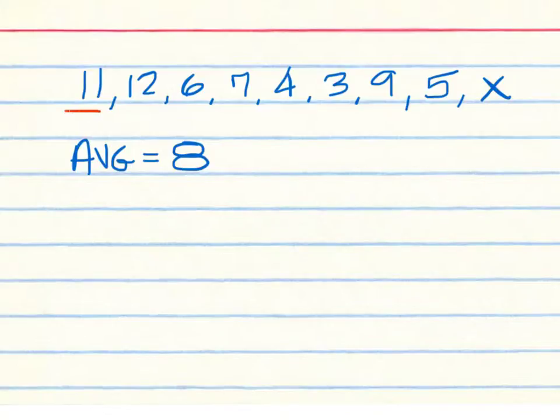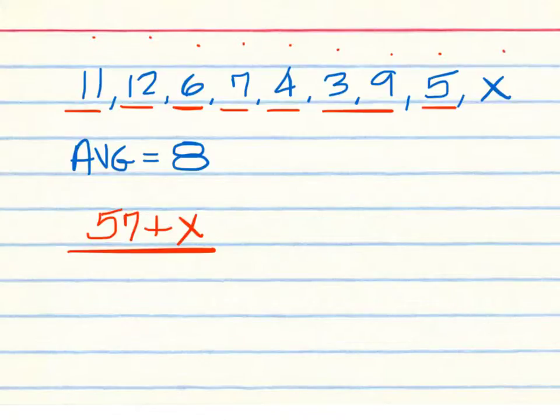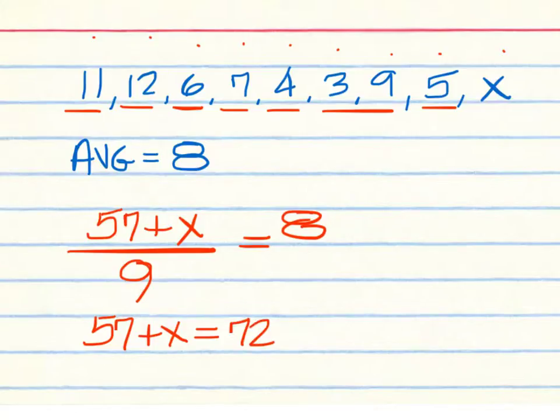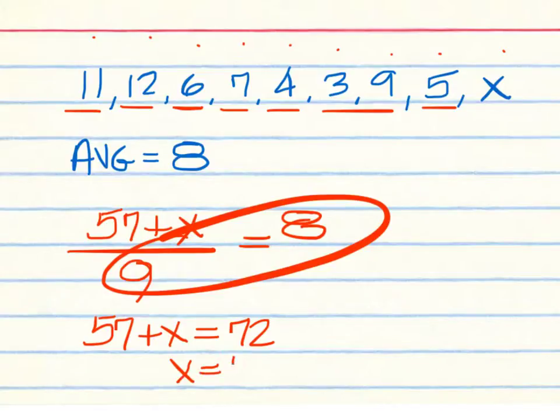57. Let's see. 11, 23, 29, 36, 40, 52, 57. Yes. And what do I add to the 57? X. What do I divide all that by? We have 1, 2, 3, 4, 5, 6, 7, 8, 9, including the X. You have to include the X, so that would be 9. And we set it equal to what? 8. 57 plus X equals, and then 72, that comes from this. And then 72 minus 57 would be 15.